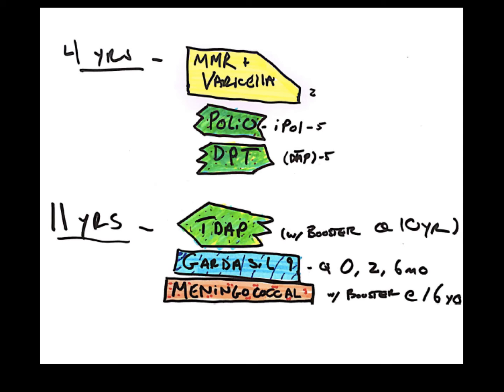And then we also start the meningococcal vaccine series at 11 years. And we usually give kids a booster around 16 years old or just before starting college.